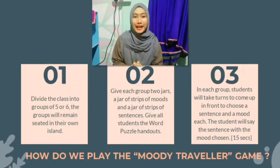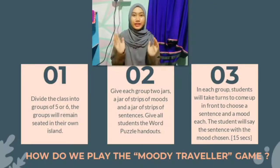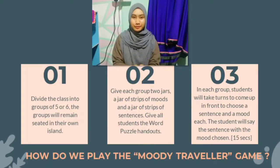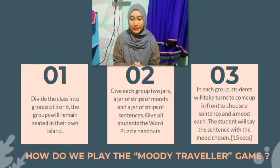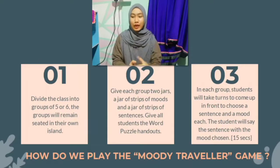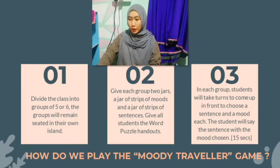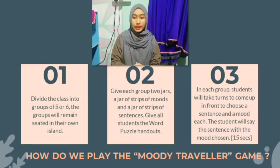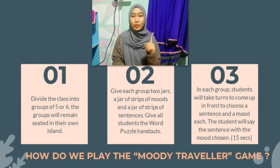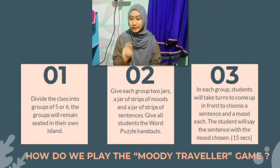How do we play the Moody Travelers game? First of all, the teacher will divide the class into groups of 5 or 6, where the groups will remain seated in their own circle or island. The teacher will then give each group 2 jars: 1 jar of moods and 1 jar of sentences.